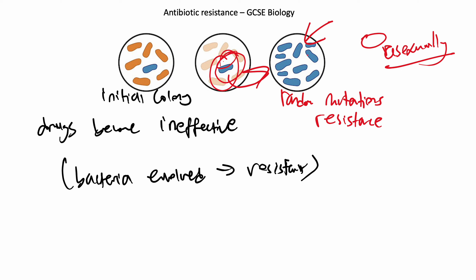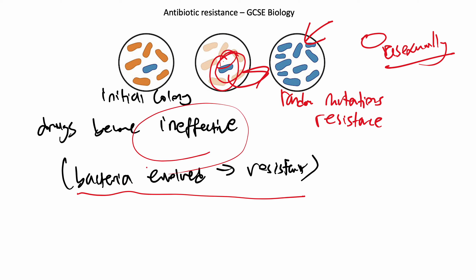A stronger antibiotic will be needed to kill these bacteria, and some of them will be more resistant again, and then you need stronger and stronger doses. That's eventually when your bacteria become resistant and your drugs become ineffective. An antibiotic just means any drug that kills germs. Over time the bacteria can accumulate resistance to multiple antibiotics, leading to multiple resistance and the formation of superbugs - drug-resistant bacteria. MRSA is an example of a superbug.